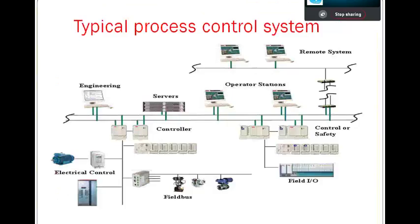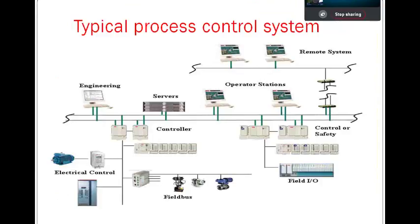A typical process control system — you can see starting from field devices, field IOs, control or safety, electrical control, engineering stations, servers, operator stations, remote stations, and field buses. These are the field buses, and these details will be part of the next slides.